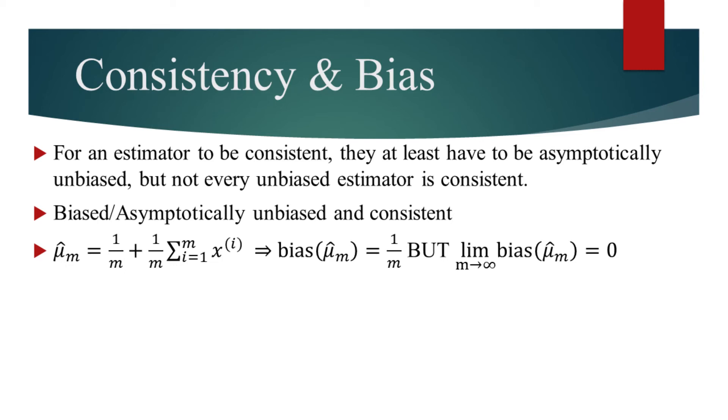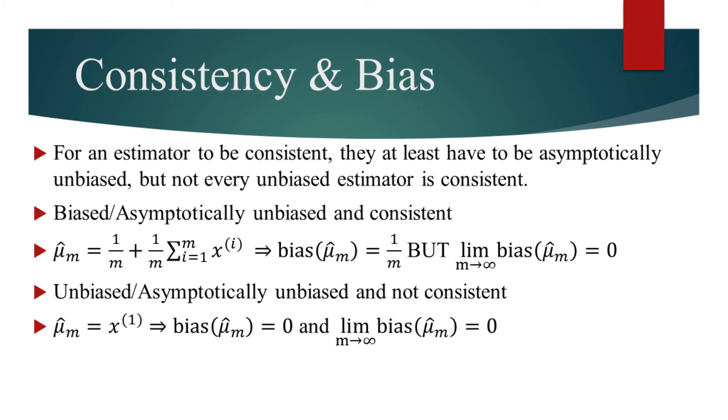Now let's consider an unbiased estimator which is not consistent. The expected value of the first data point is the mean of the data generating distribution. So estimating the mean based on the first sample would be an unbiased estimator. No matter how many data points are seen, the bias would remain zero. This implies that this is an asymptotically unbiased estimator.